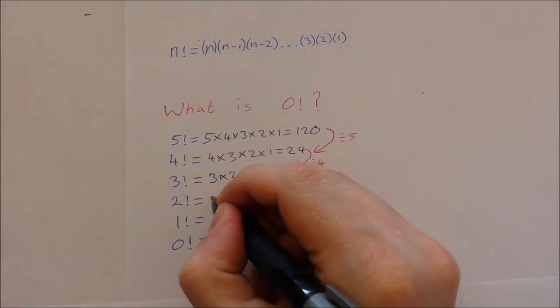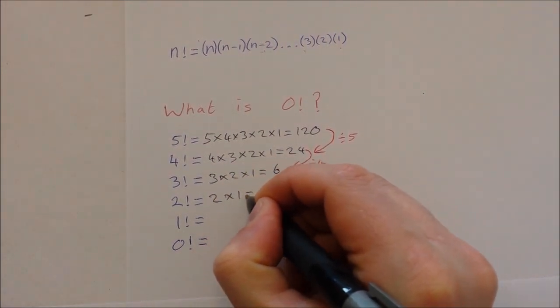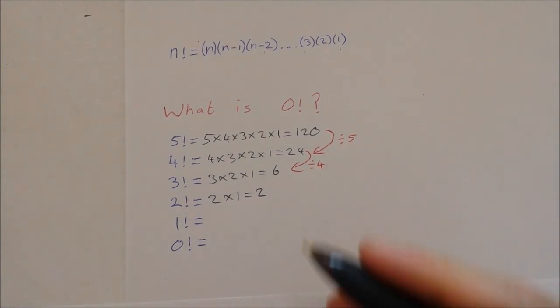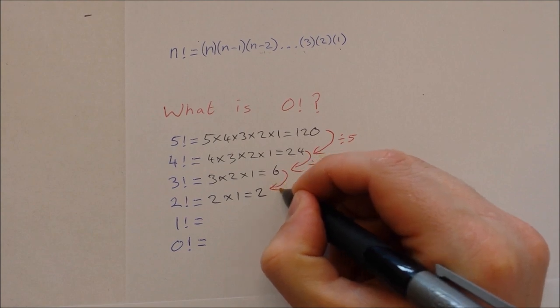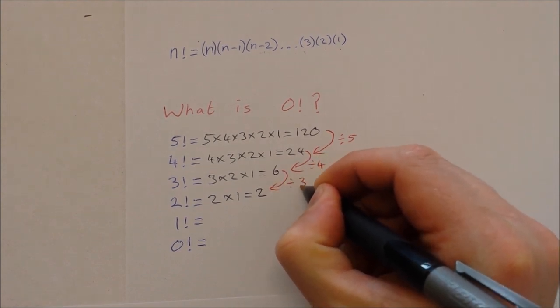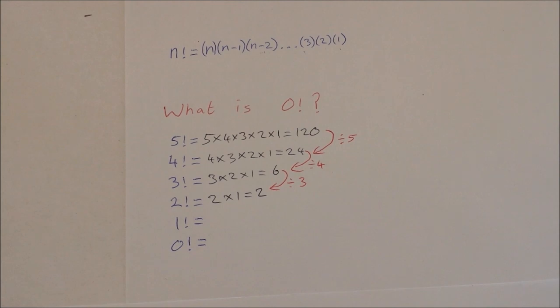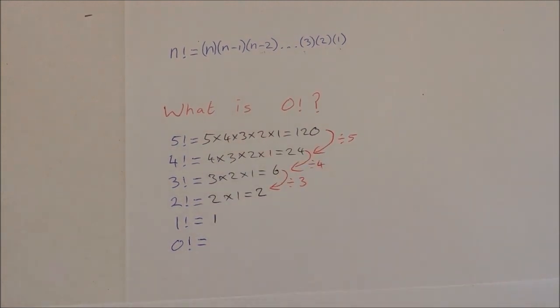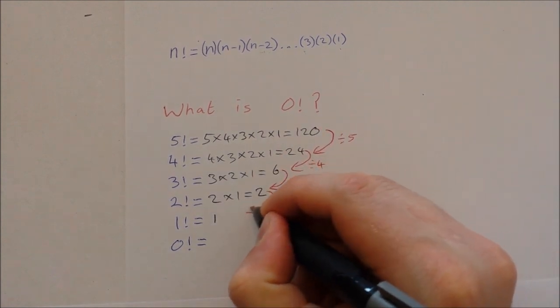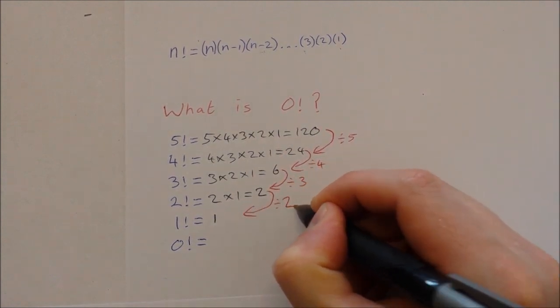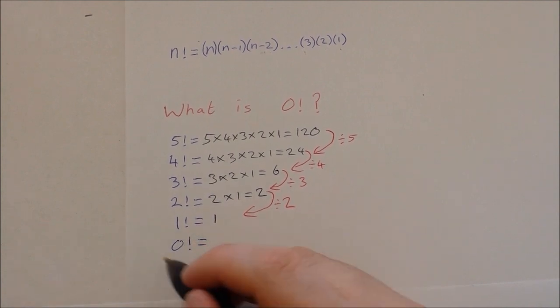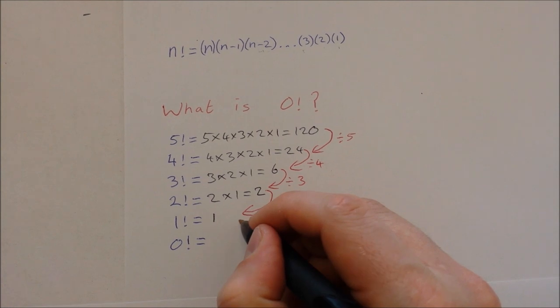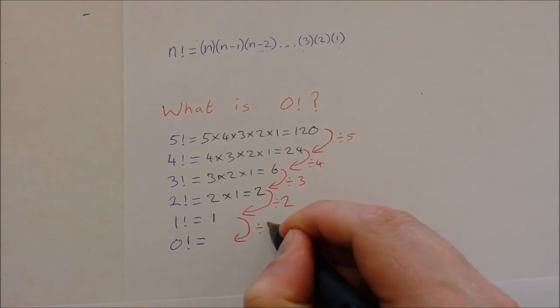2 factorial then is 2 by 1, which is 2. And 6 divided by 3 is 2. 1 factorial is then just 1. 2 divided by 2 is 1. So if we continue this on, 0 factorial, I don't know what it is at the moment, but if we do 1, we divide by 1 this time.